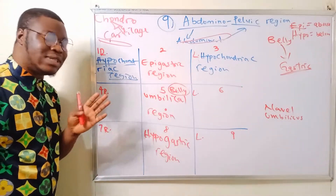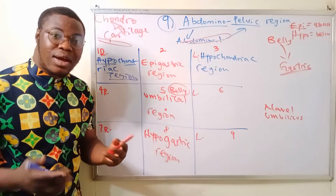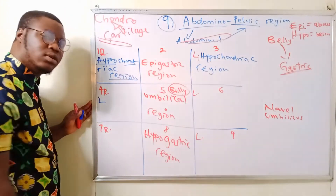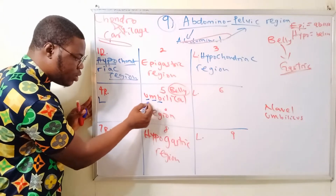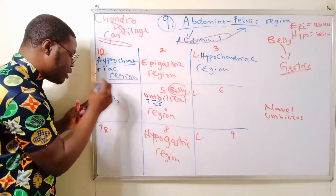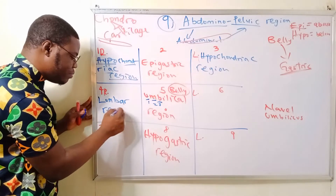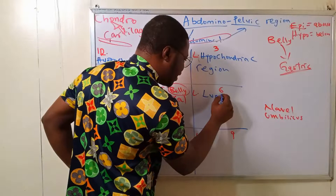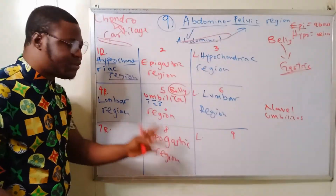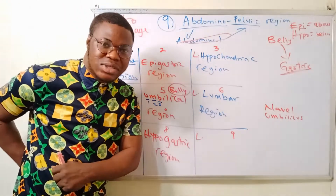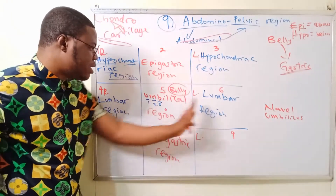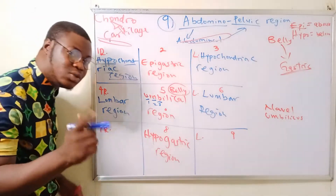For the middle lateral regions, here's a memory trick: the word 'lie' starts with 'L.' Take the first three letters of 'umbilical' — U-M-B — and add them to get 'lumb,' giving you the right lumbar region and the left lumbar region. These regions are on either side of the lumbar vertebra at the posterior part, which is why they are called the lumbar regions.